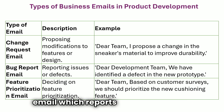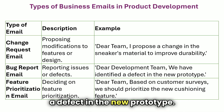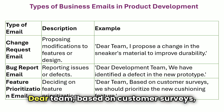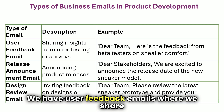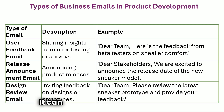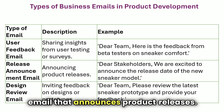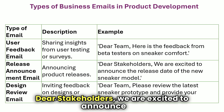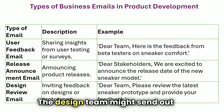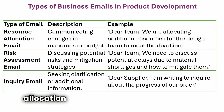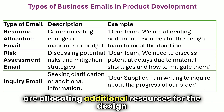A bug report email reports issues or defects — for example: 'Dear development team, we have identified a defect in the new prototype.' A feature prioritization email communicates decisions about feature prioritization — for example: 'Dear team, based on customer surveys, we should prioritize the new cushioning feature.' User feedback emails share insights and results from user testing or surveys — for example: 'Dear team, here is the feedback from beta testers on sneaker comfort.' A release announcement email announces product releases — for example: 'Dear stakeholders, we are excited to announce the release date of the new sneaker model.' A design review email invites feedback on designs or prototypes — for example: 'Dear team, please review the latest sneaker prototype and provide your feedback.' A resource allocation email communicates changes in resources or budget — for example: 'Dear team, we are allocating additional resources for the design team to meet the deadline.'